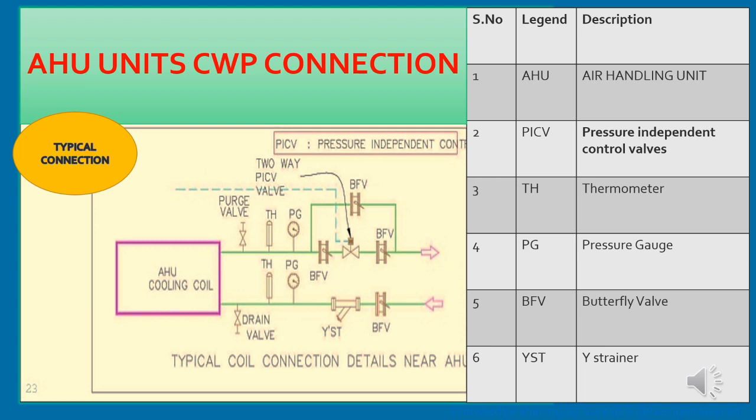Now we are going to see how a typical AHU chilled water pipe connection works. AHU is the air handling unit. PICV is a pressure independent control valve, TH is a thermometer, PG is a pressure gauge, BFV is a butterfly valve, and OST is the strainer. The strainer always has to be installed in the supply line towards the AHU.